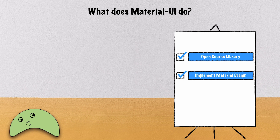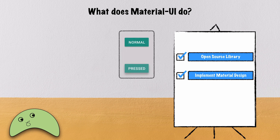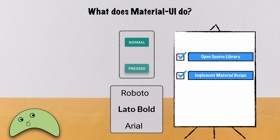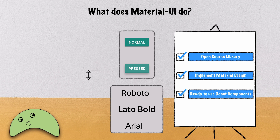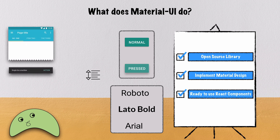Material Design provides guidelines and specifications for everything needed in your application, including buttons, typography, color theme, spacing, and much more. Material UI library implements those guidelines and gives you back those ready-to-use components that you can hook into your React apps. You just need to use Material UI in your project and import the components you need.